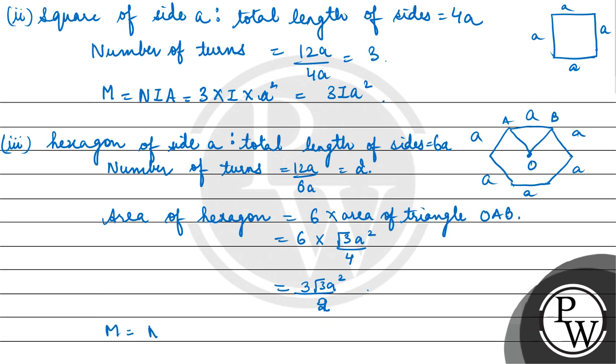This will be equal to 3 root 3 A square upon 2. Magnetic dipole moment NIA, number of turns 2 into current I into area 3 root 3 A square upon 2. This gives 3 root 3 I A square.